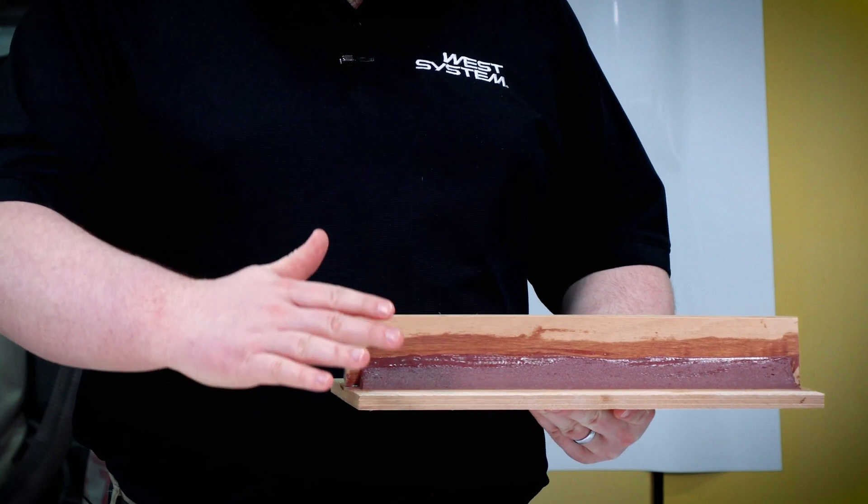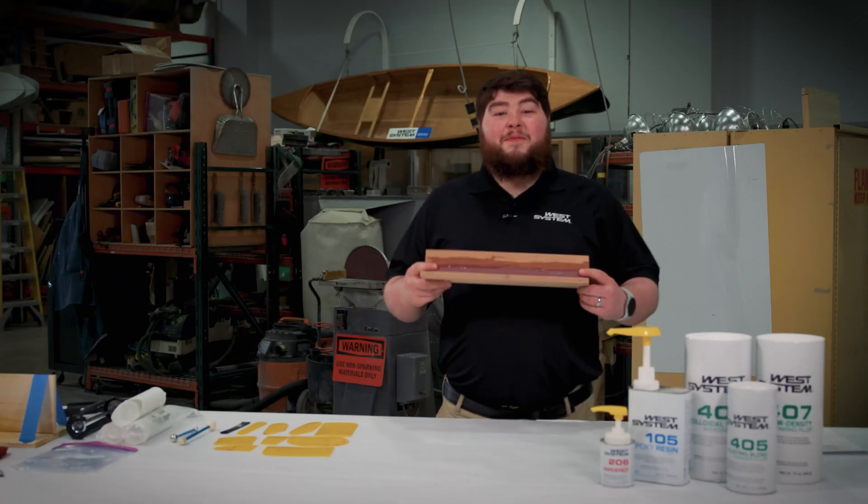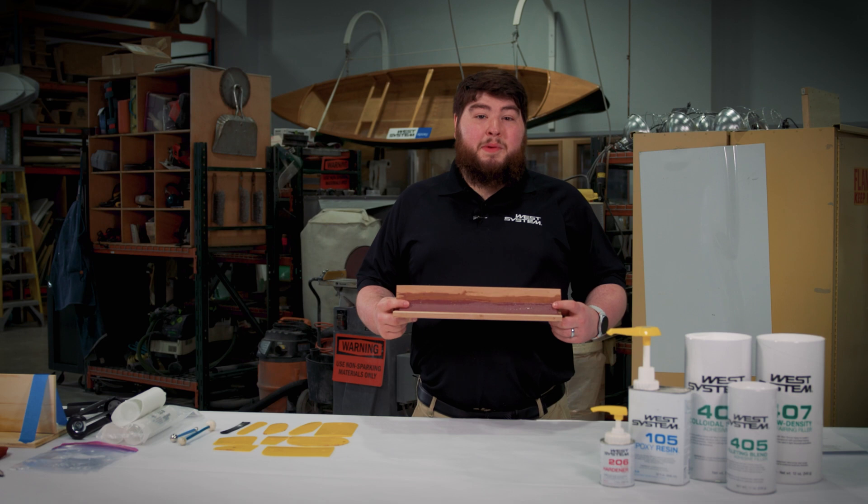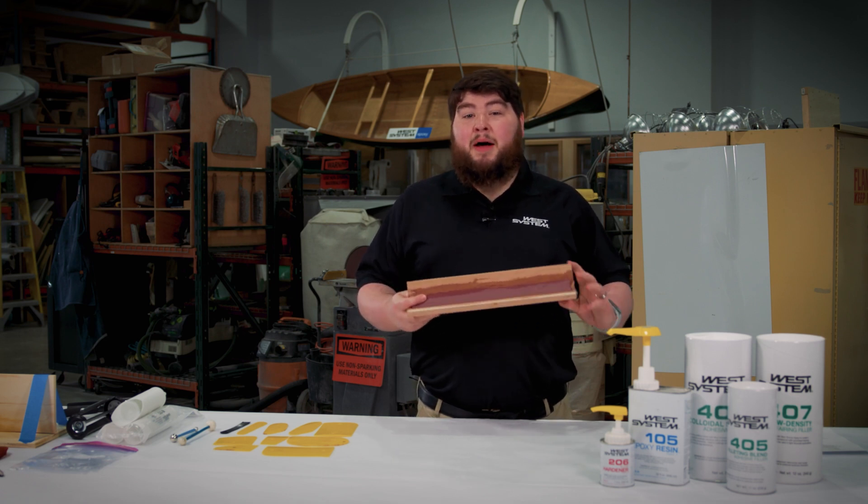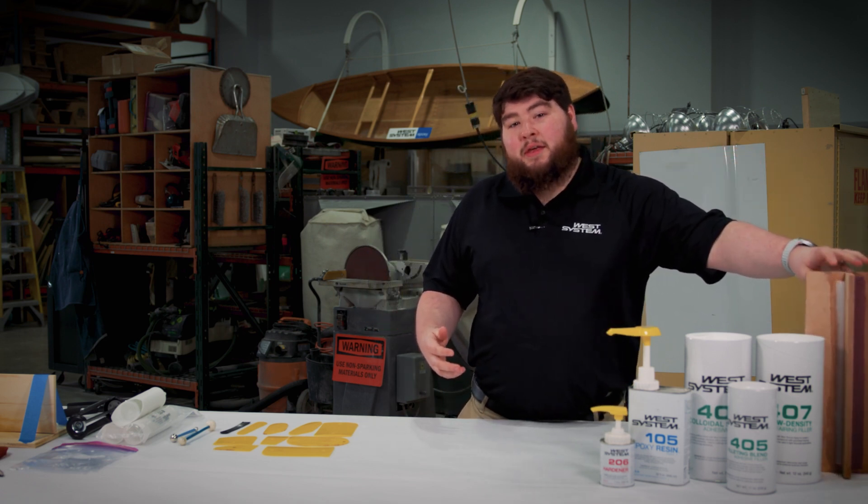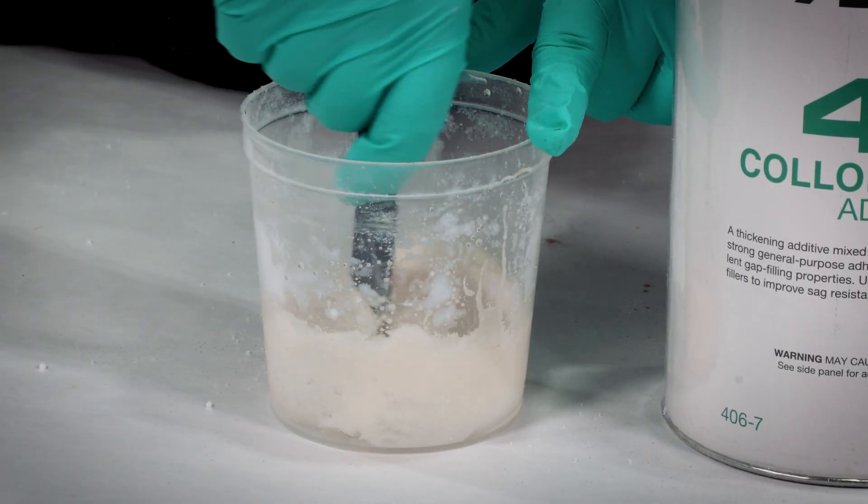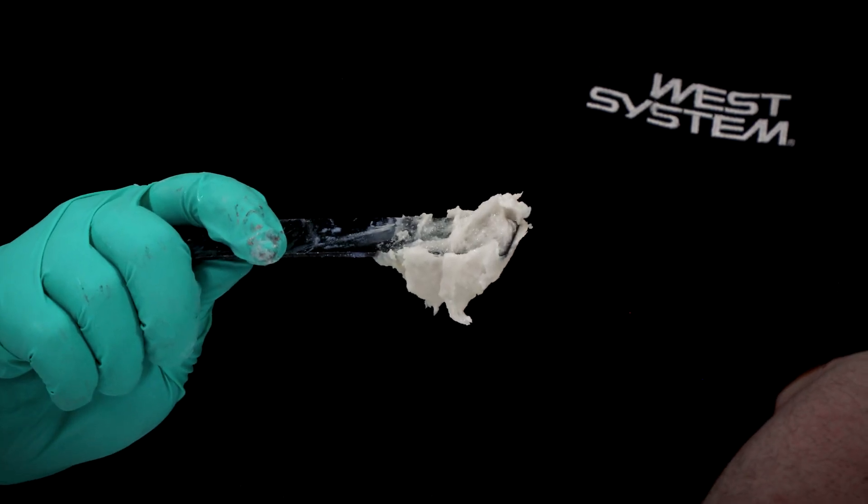Another important thing is it makes it easier to lay fiberglass over this area. Fillets are commonly seen in stitch and glue boats but can also be used to bond composite parts together. We recommend using thickened epoxy for this process because it helps the fillet keep its shape and stay in place if you're doing anything overhead.